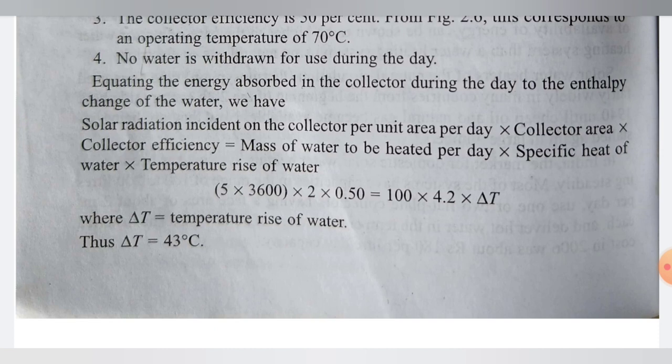Now, equating the energy absorbed by the collector during the day to the enthalpy change of the water, we have: solar radiation incident on the collector per unit area per day, multiplied by the collector area, multiplied by collector efficiency, equals the mass of the water to be heated per day, multiplied by specific heat of water, multiplied by the temperature rise of the water.